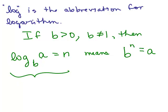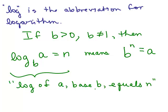I'm going to write down how you read this. We read it: log of a base b equals n. So here's an equation, and when you look at it, it looks kind of funny, but here's how you write it in exponential form. You take a look at what the base is.